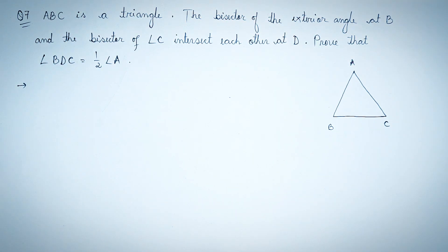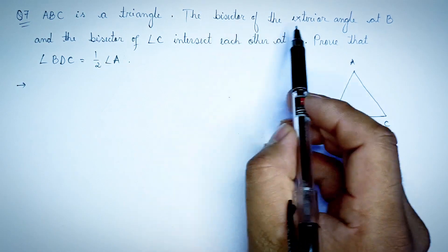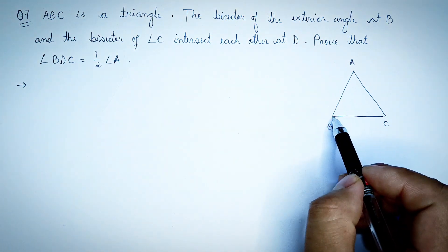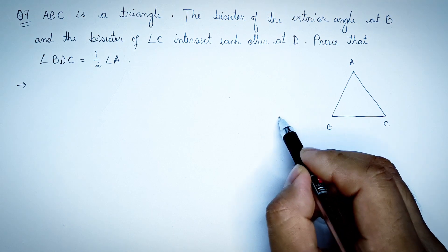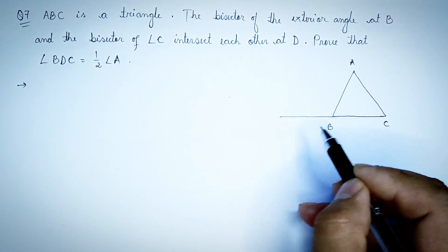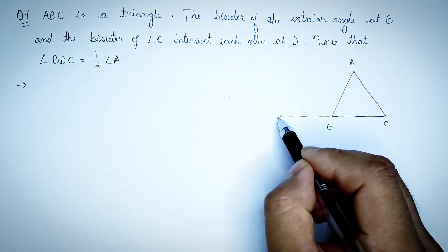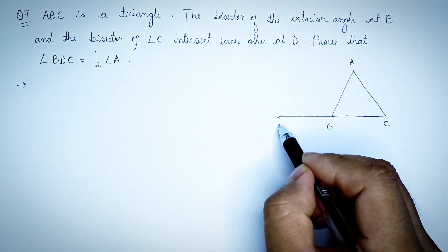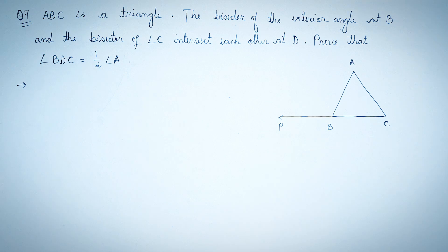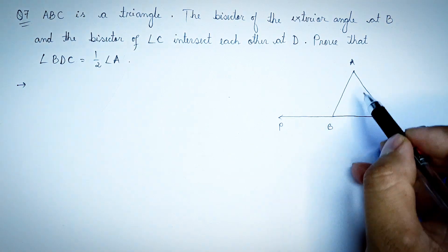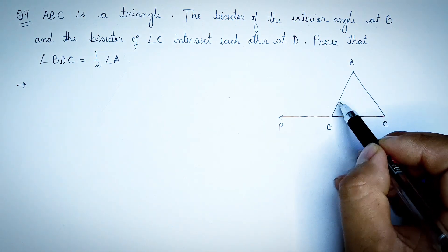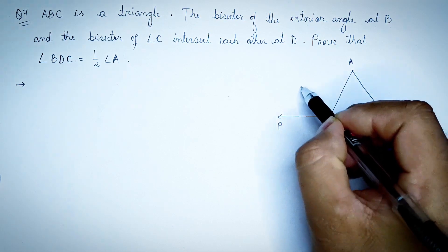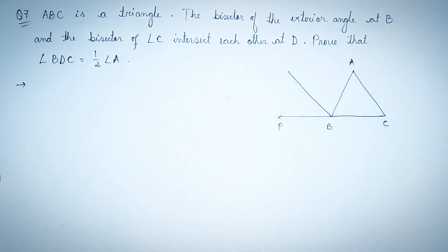In triangle ABC, the bisector of the exterior angle at B is the exterior angle bisector. The exterior angle of A and B is considered, and B is the exterior angle bisector.